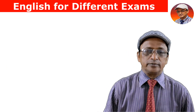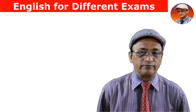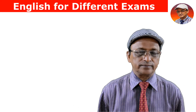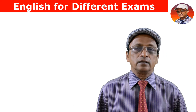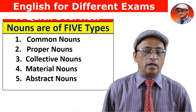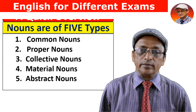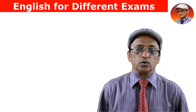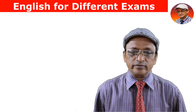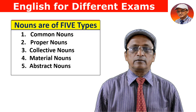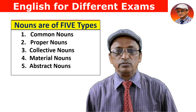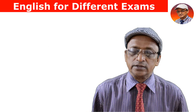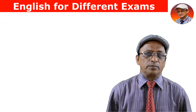Nouns are of five types, five categories. The first one is proper noun. Another one is common noun. The third one is collective noun. The fourth one is material noun. And the fifth one is abstract noun.